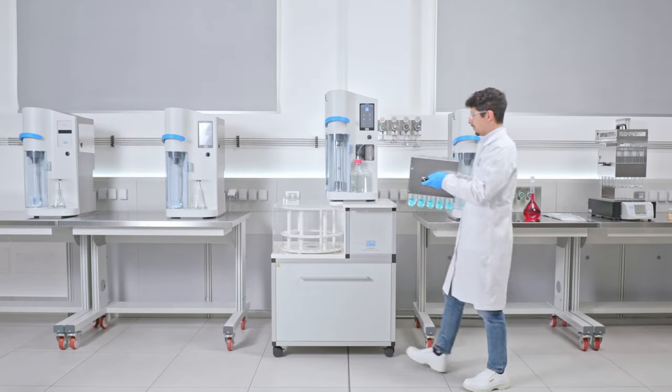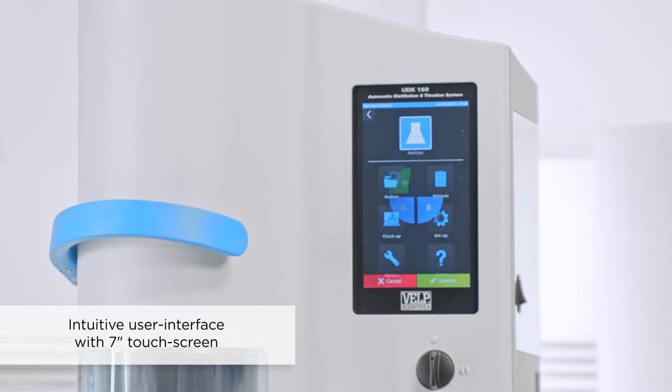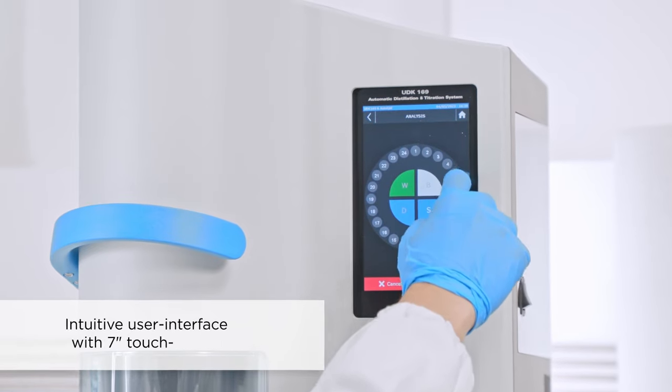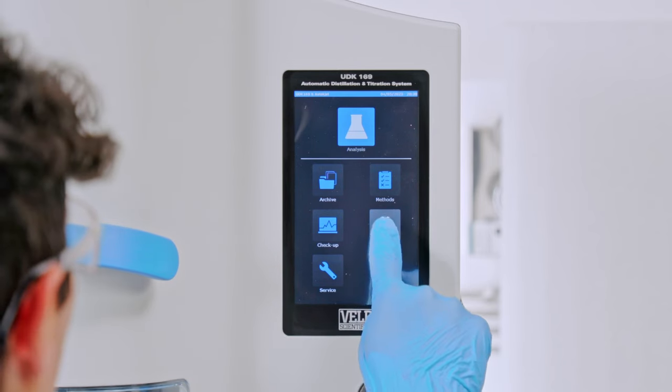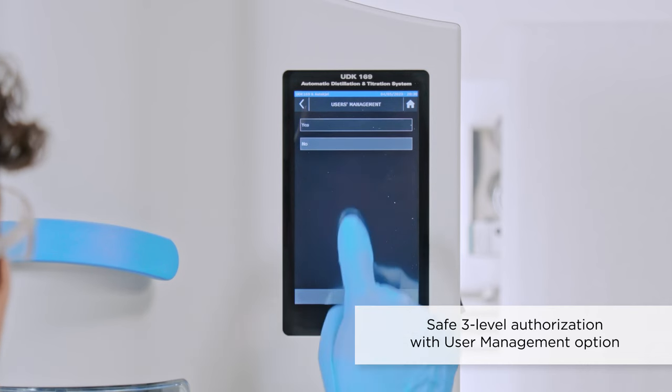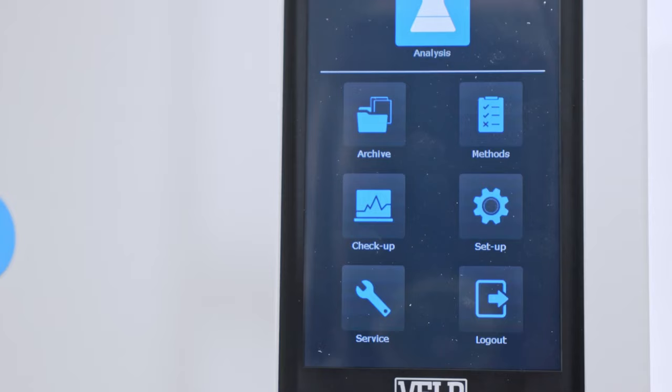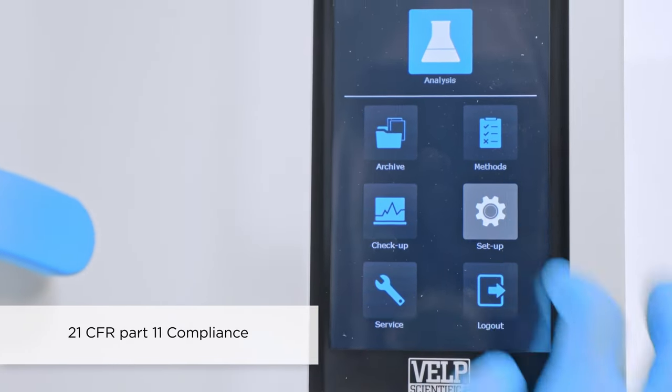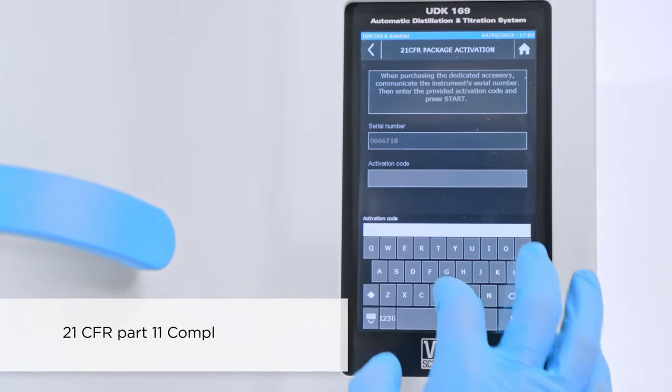Working with UDK169 is easy and fast. Thanks to the intuitive user interface and the bright 7-inch touchscreen, the operator can easily control each step of the analysis and access results seamlessly. The user management option ensures security and compliance, granting access with three levels of authorization. Furthermore, the optional 21 CFR Part 11 upgrades the software for FDA compliance.